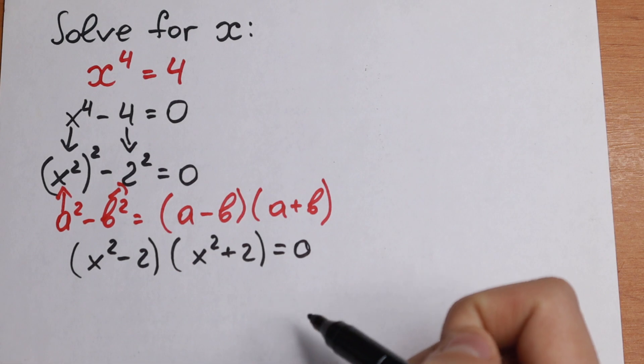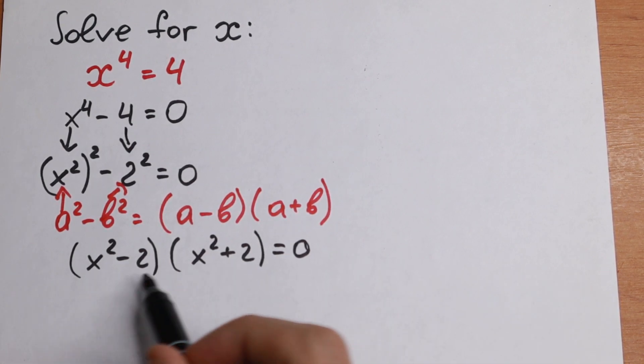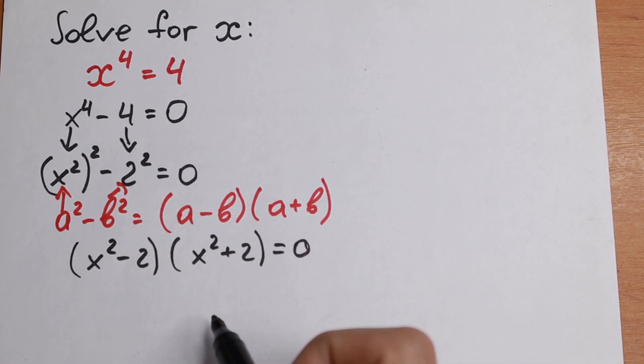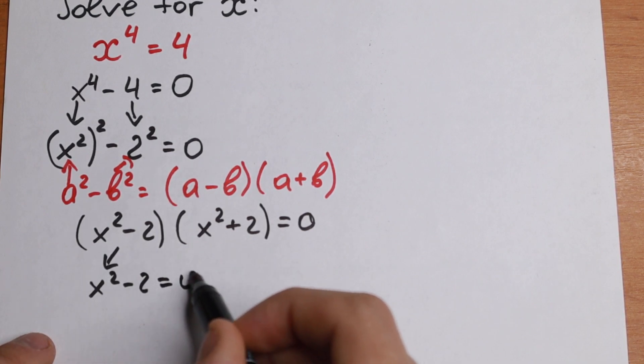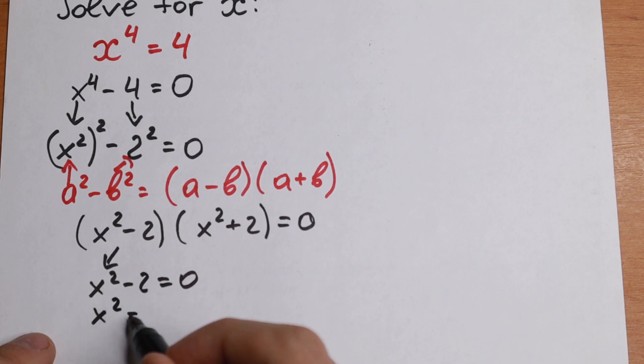So why have we done this step? Right now we have a product of two parentheses. So we need to write that x squared minus 2 equals 0. From here x squared equals 2.